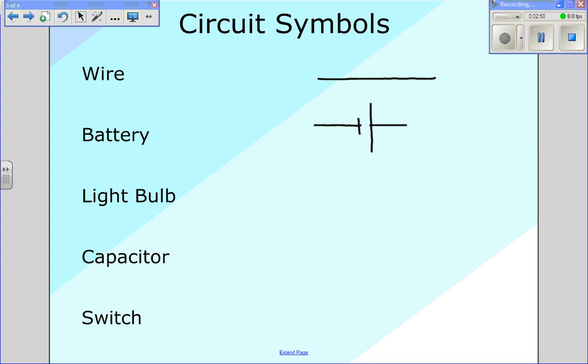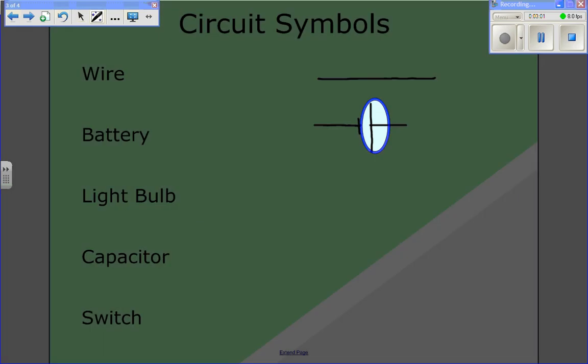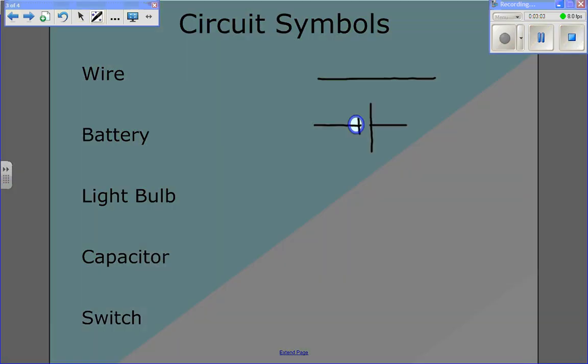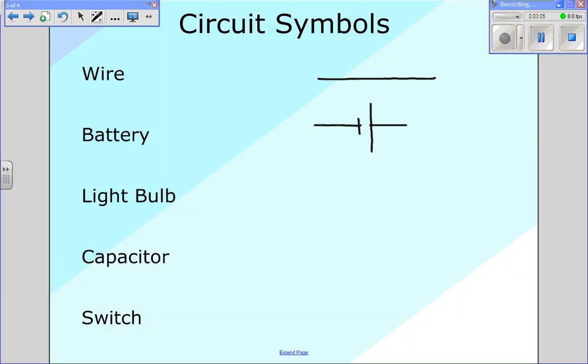Batteries have positive and negative sides, and in this symbol we can see that too. The positive side of the battery is going to be the side that is longer here, and then the negative side is going to be the shorter side. You can put a little plus sign on this side and a negative sign.